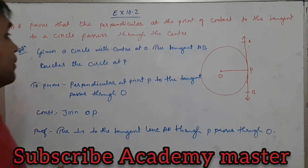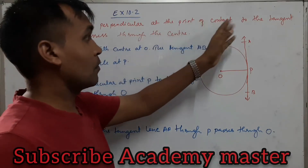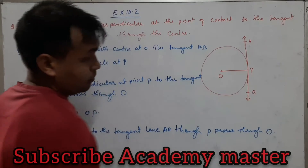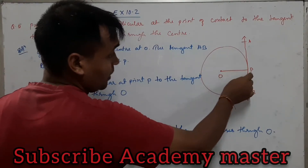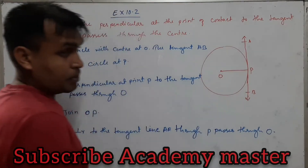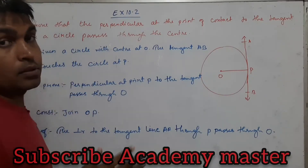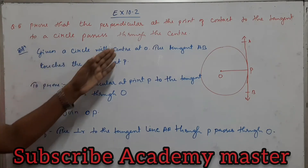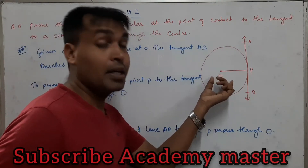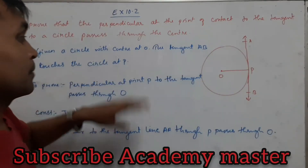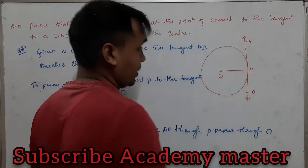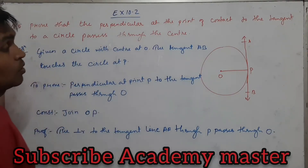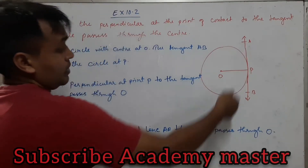The next question is: prove that the perpendicular at the point of contact of the tangent to a circle passes through the center. We have to prove that at the point of contact P, the radius is perpendicular, and this radius passes through center O. Given: a circle with center O; the tangent AB touches the circle at P. To prove: the perpendicular at point P to the tangent passes through O.